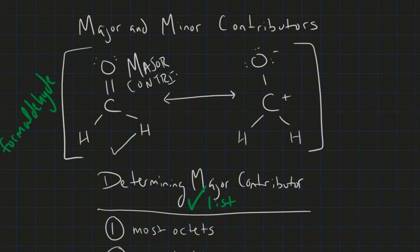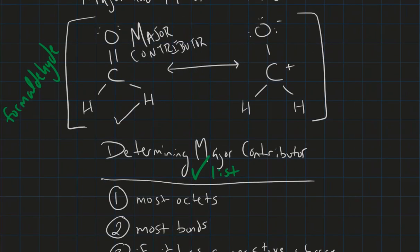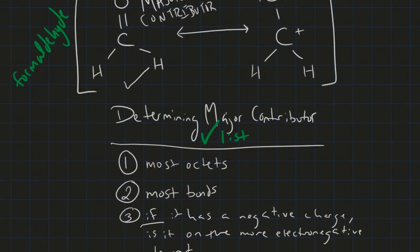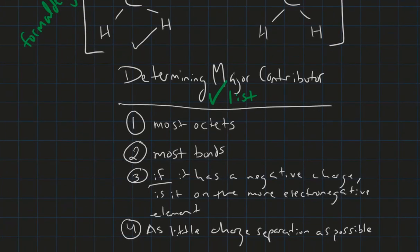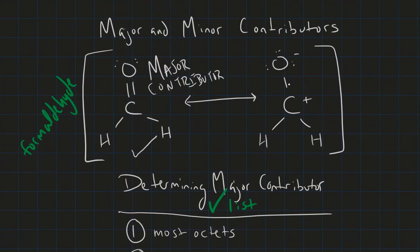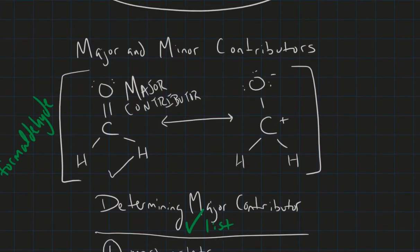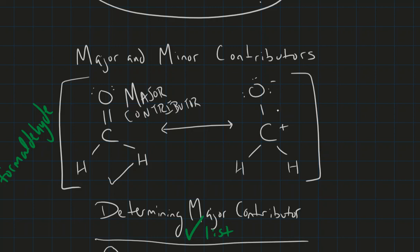But if we check out our other steps, we could have figured this out with other ones too. Which one has more bonds? Well, our major contributor does. It has a double bond there. If it does have a negative charge, is it on the more electronegative element? The minor contributor does have that. But we have no charge over here, which is even better. And then as little charge separation as possible, this one has charge separation and this one does not. So we easily know which one is our major contributor, this one over here on the left.